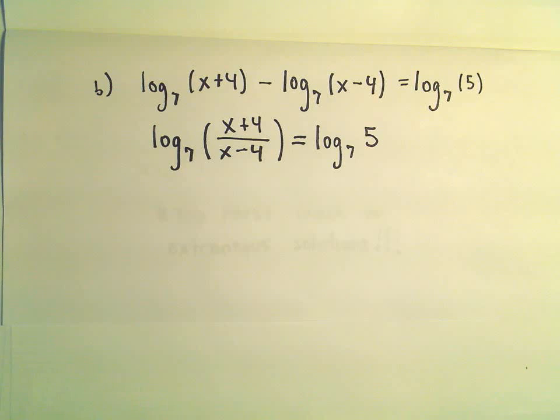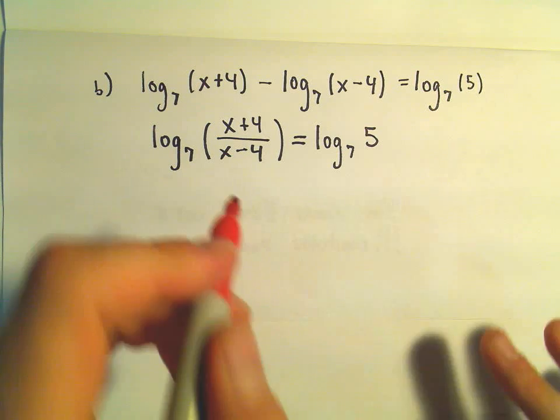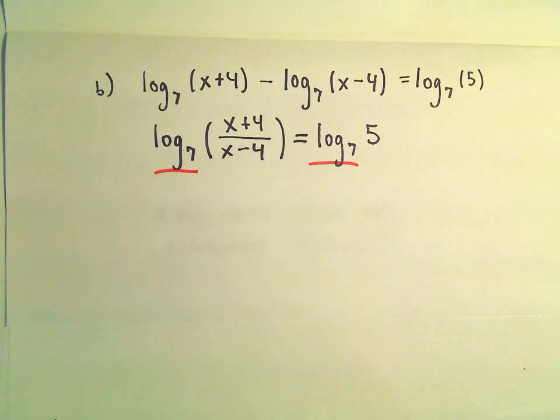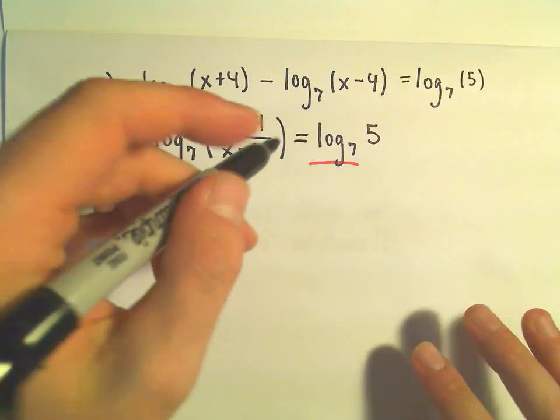And at this point the thing I recognize is we've got log base 7 of something, log base 7 of something. The idea is we can just set the stuff inside equal to each other.